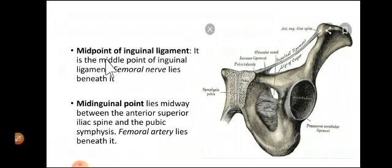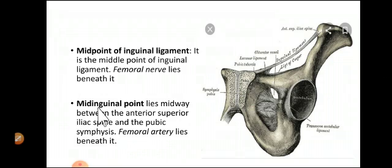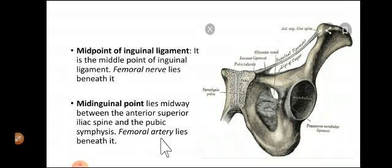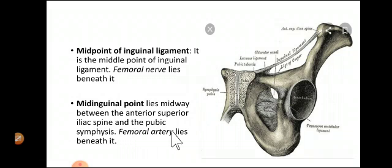Deep to the midpoint of the inguinal ligament we have the femoral nerve, and deep to the mid inguinal point we have the femoral artery. So if we want to palpate the femoral artery, go to the mid inguinal point and you will feel the pulsations of the femoral artery. The femoral vein lies medial to this femoral artery, so if any procedures are to be done on these vessels, we know where to look for them.